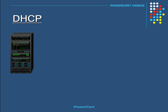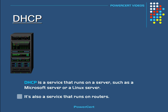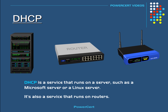One final thing to note about DHCP is that it is a service that runs on a server — for example, a Microsoft server or a Linux server. But it's also a service that runs on many routers, whether the router is a business router or a small office home office router. These routers will have a DHCP service built into them.